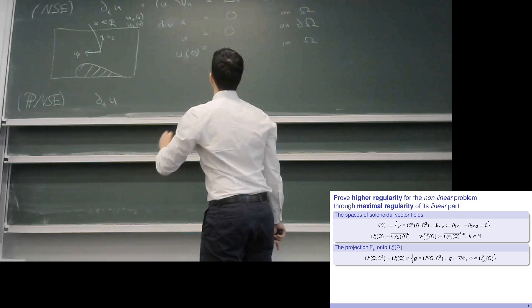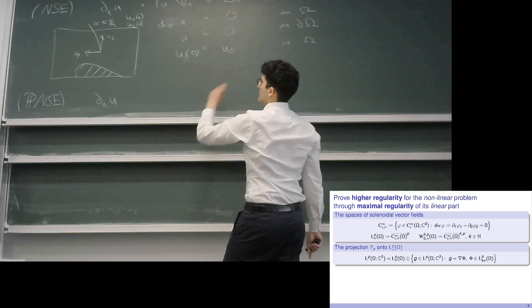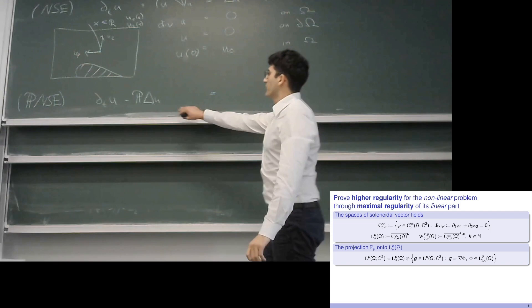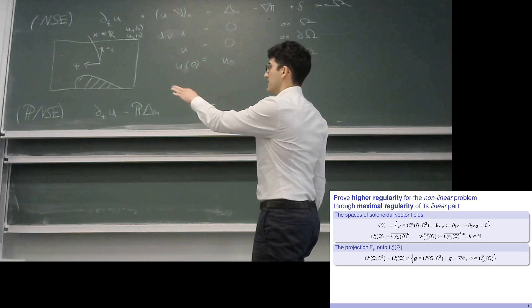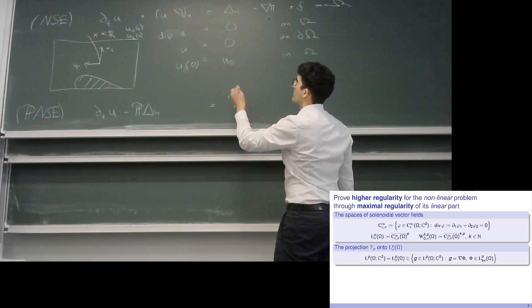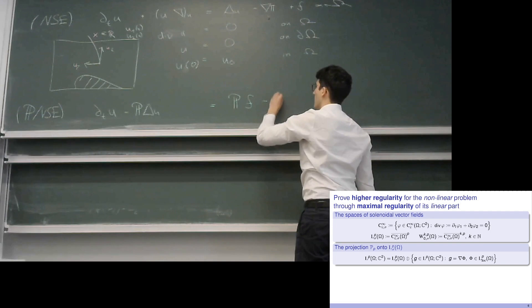After reordering terms, applying the projection to the negative Laplacian of u gives a new operator; the projection applied to the pressure vanishes because the pressure stems from the topological complement. We also apply the projection to the right-hand side, which consists of f and the convective nonlinear term.